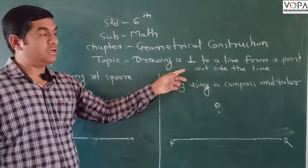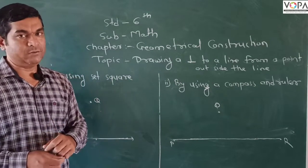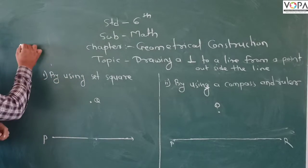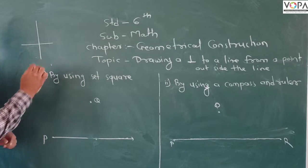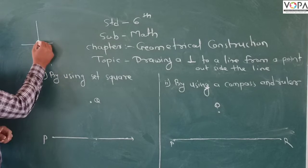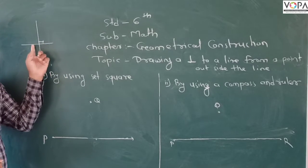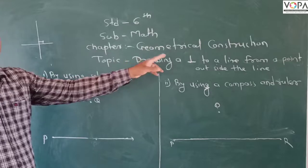So how to draw this perpendicular? First, let's find the meaning of perpendicular. What is perpendicular? Whenever two lines are intersecting each other, if they make an angle of 90 degrees, then we call this a perpendicular.